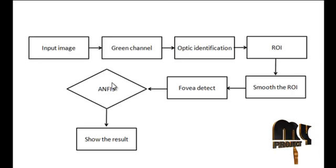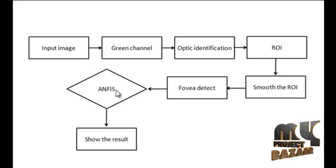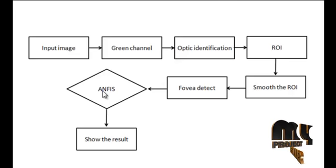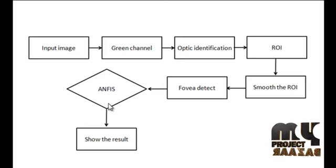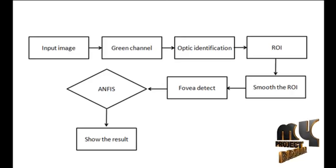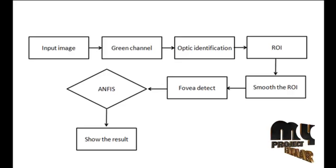This classification is done in ANFIS algorithm. The adaptive neuro-fuzzy inference system or ANFIS is used to classify the images to get the final result. The result will be more accurate than the previous method. The acronym ANFIS derives its name from adaptive neuro-fuzzy inference system. Using a given input and output data set, the toolbox function ANFIS constructs a fuzzy inference system.